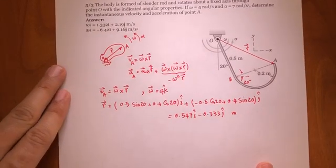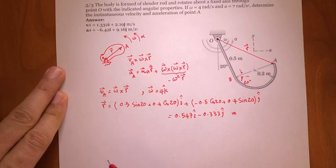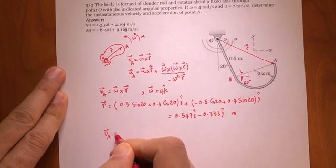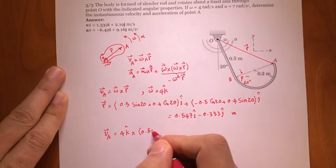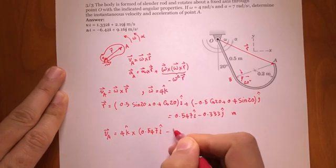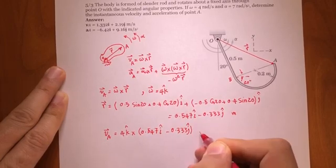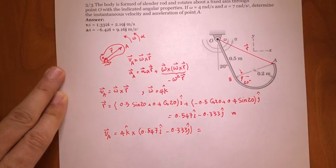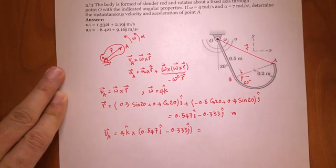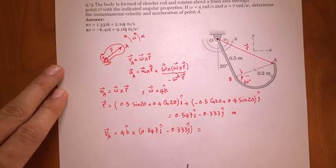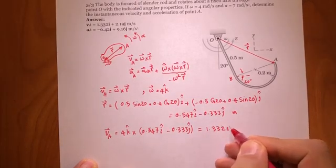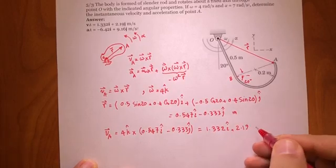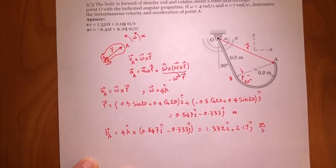We plug these two vectors into the velocity equation. Velocity of A equals 4k̂ cross (0.547î minus 0.333ĵ). Since k cross i equals j and k cross j equals negative i, and there's another negative making it positive, the result is 1.332î plus 2.19ĵ meters per second. That's the velocity.